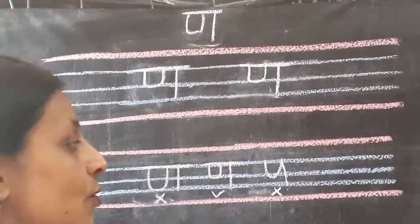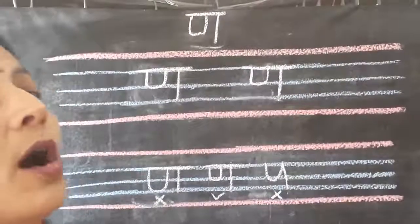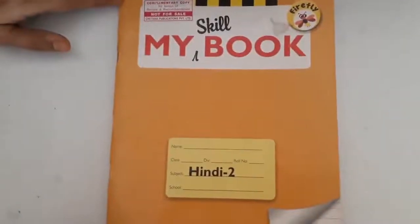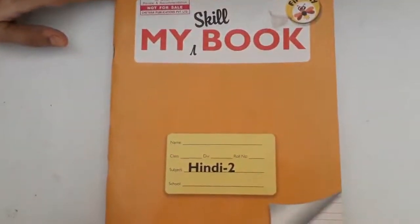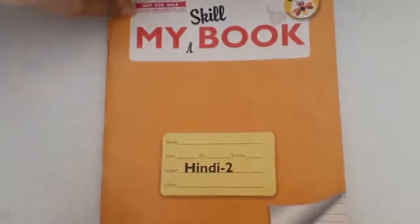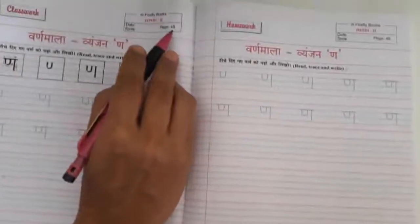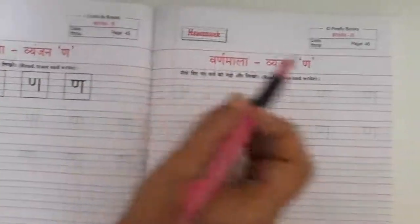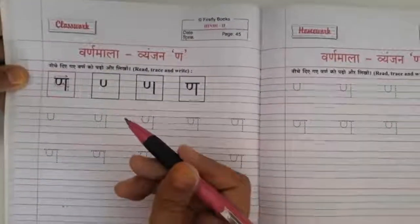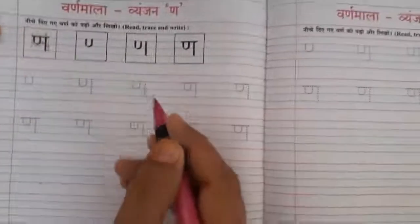So I hope you have understood and you are going to do it well because the letter N is very simple. So now we will write in our notebook. Are we all ready with my scale book Hindi notebook? Let's open. I have opened page number 45 and 46. And first of all you are going to write today's date on both the pages. And then we will start writing letter N.